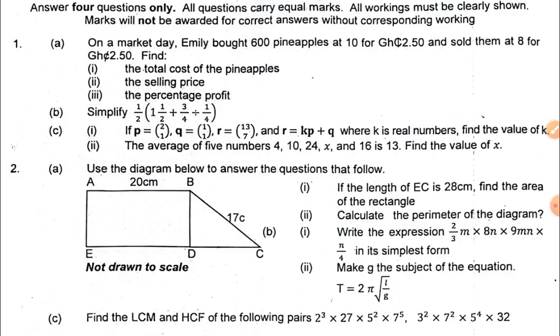Question two has to do with plane figures. You're supposed to read through and then find the perimeter of the diagram. Part B has to do with writing an expression in the simplest form, then part B(ii) is change of subject. Part C has to do with finding LCM and then HCF.